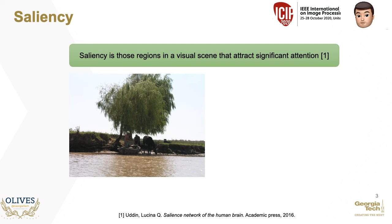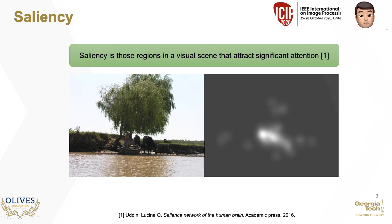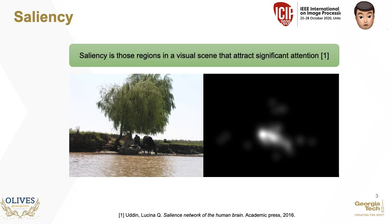Consider the image shown below, taken from the popular MIT 1003 database. This image was shown to a number of people and their eyes were tracked. The grayscale map on the right is a combination of all their gazes. Notice that all the human subjects focus their attention on the people and horses in the scene. Our goal is to objectively determine this grayscale map.